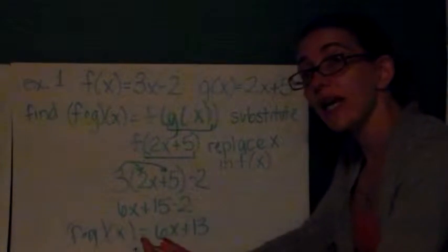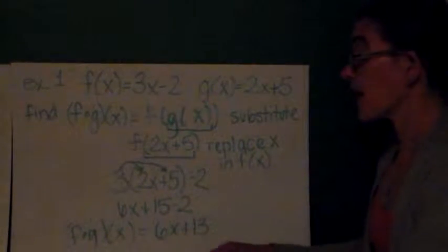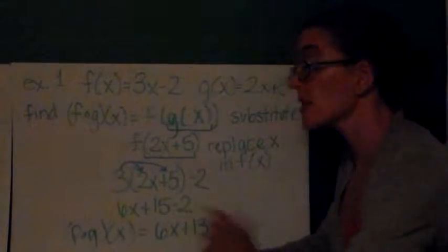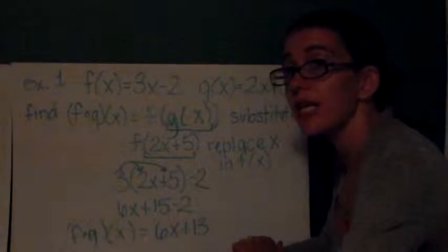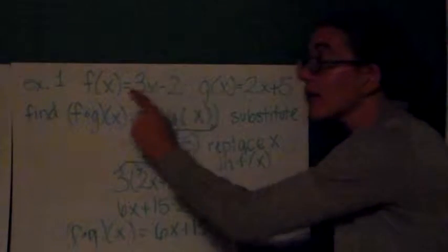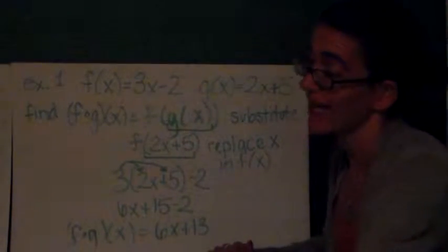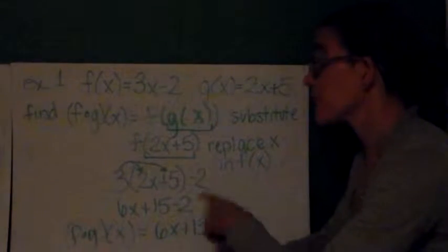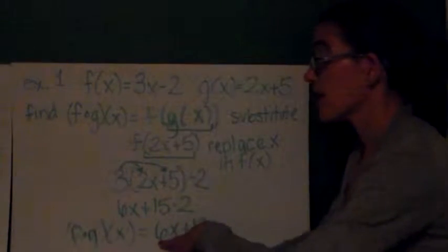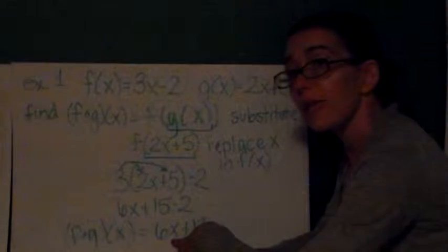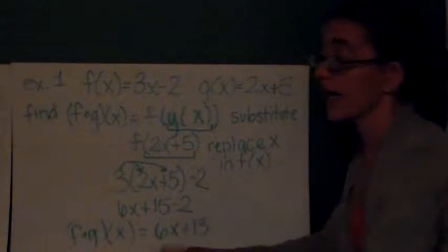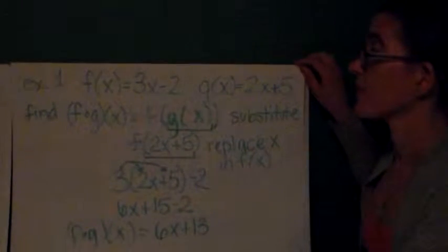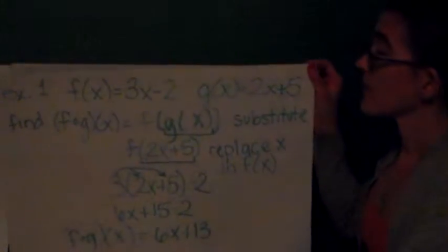What this tells me is that if I wanted to take a value for x, plug it into the g function, get an answer, plug that answer into the f function, and get my final answer, there's an easier way to do it. Instead of going through all of these steps, I could just multiply my number by 6 and add 13.